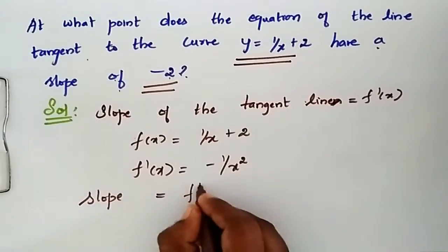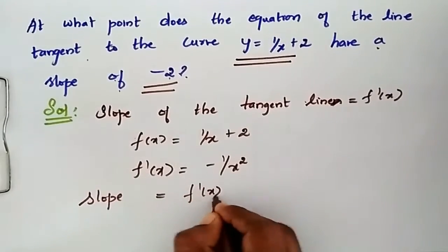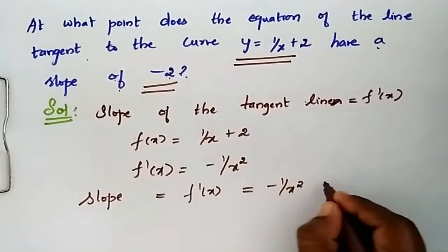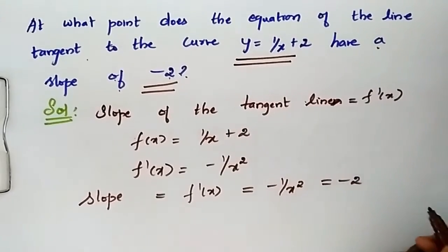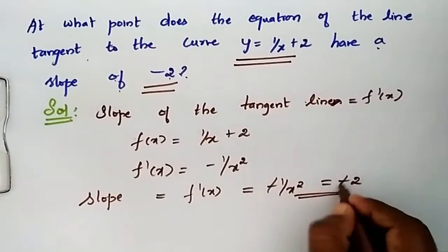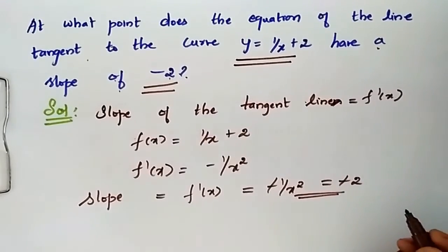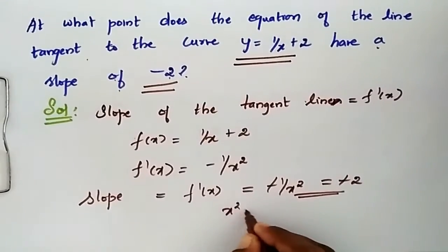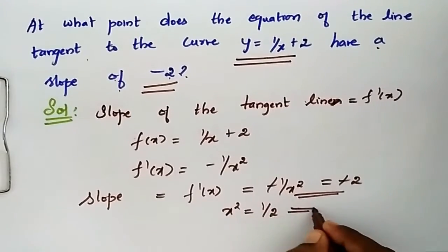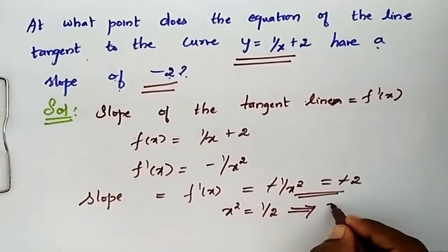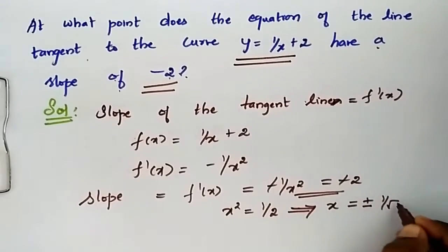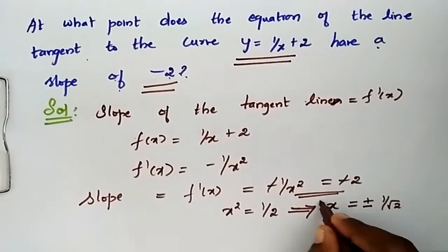f'(x) = -1/x² = -2. The negatives cancel and we get x² = 1/2. So, x is equal to plus or minus 1 over the square root of 2.